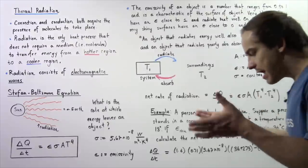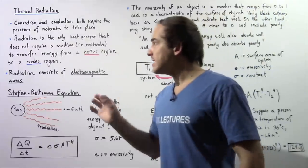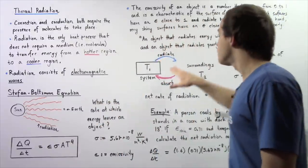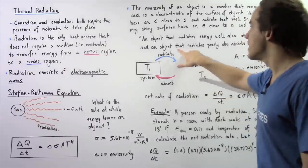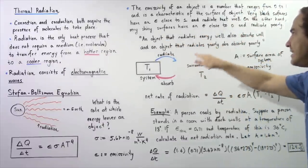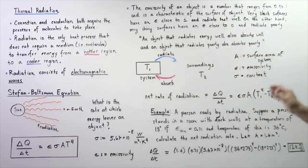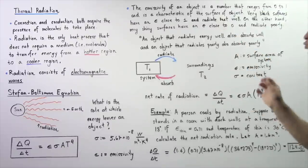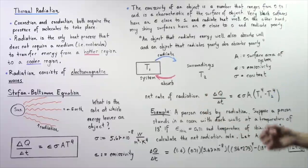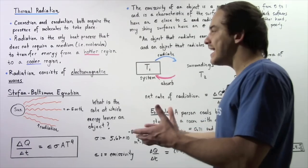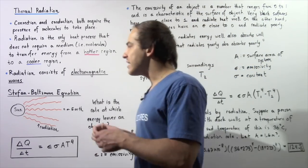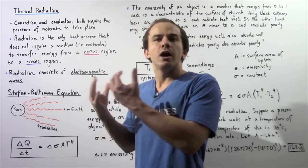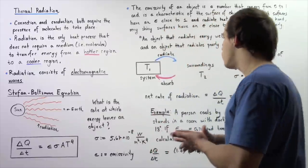When thinking about thermal radiation, we must remember the following: an object that radiates energy well also absorbs energy well, and an object that radiates energy poorly also absorbs energy poorly. For example, if the sun radiates energy very well, it also absorbs that energy very well.